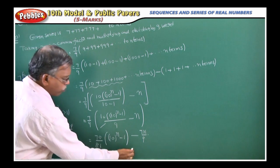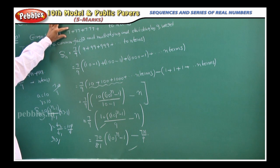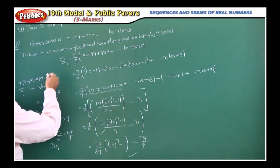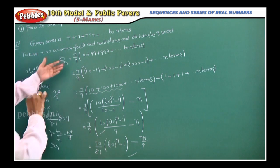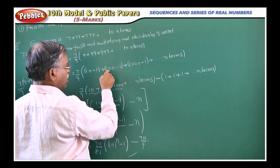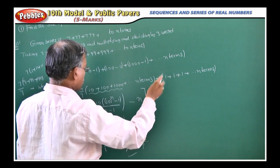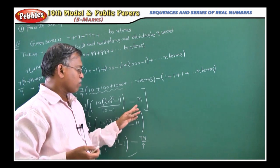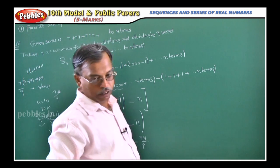So this is your final answer. It is very simple — you convert the 7 by multiplying and dividing by 9, take it as a common factor. You separate it into two series: 10, 100, 1000 plus dot dot dot n terms, minus 1, 1, 1 up to n terms. The first forms a GP; you apply the sum formula. The number of terms is n, and when you multiply by 7 by 9, this is your answer. Now we will see the next problem.